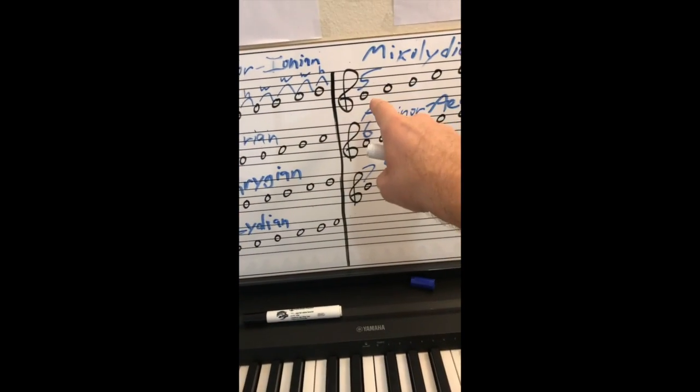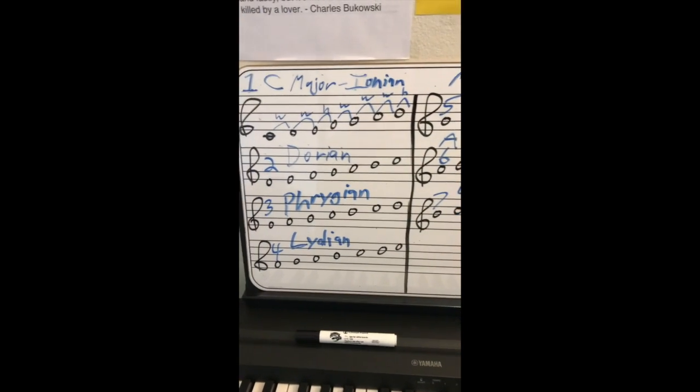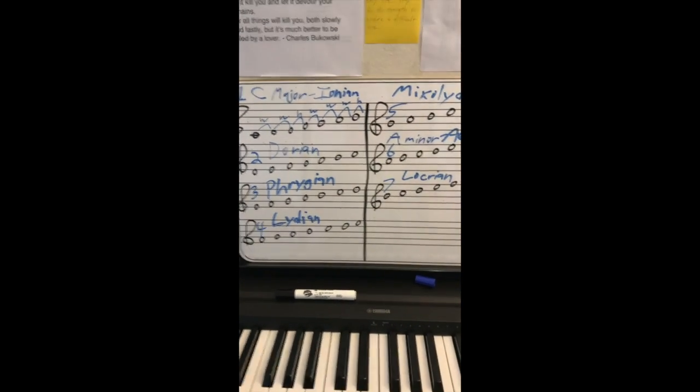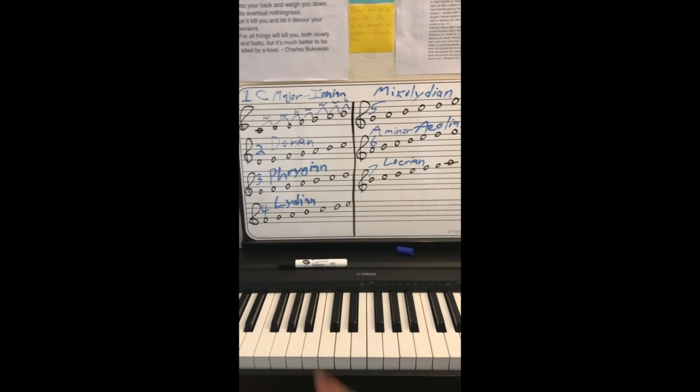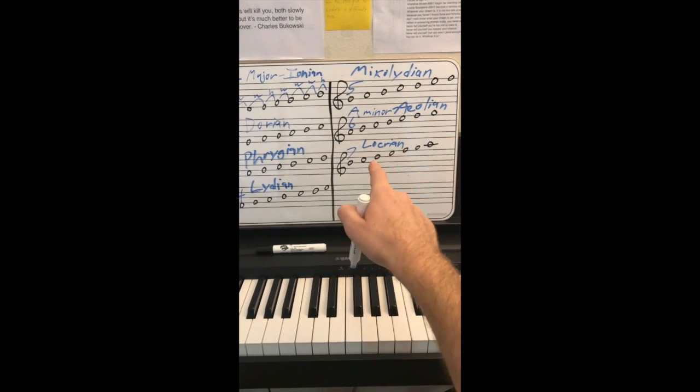There you go. Seven modes out of one combination of notes. That's level one. Let me pull back a little bit here. Ionian, Dorian, Phrygian, Lydian, Mixolydian, Aeolian, Locrian.